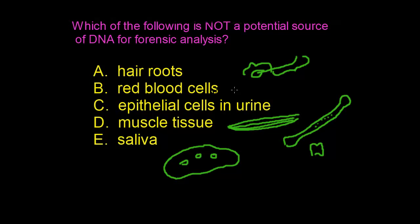Blood itself is a perfect source of DNA for extraction, and we only need about 50 microliters — roughly the size of a spot the size of a dime — to extract enough DNA. However, only white blood cells are used for this extraction, because red blood cells don't contain DNA. They do not contain a nucleus, so these cells cannot reproduce by themselves; they are only produced by bone marrow. Therefore, we cannot use red blood cells for our investigation, and the correct answer is B.